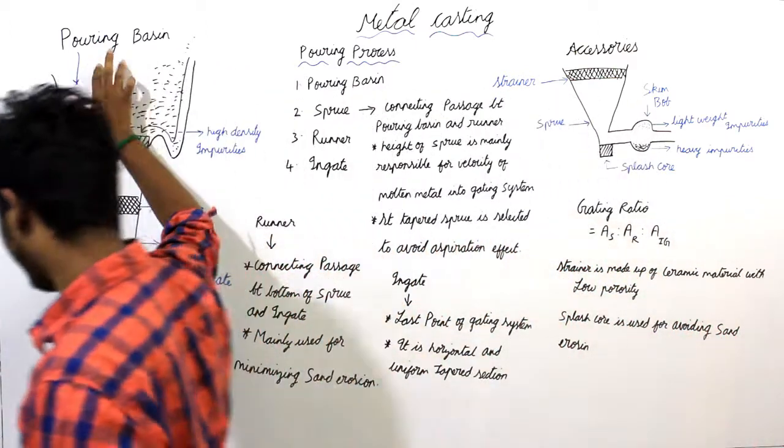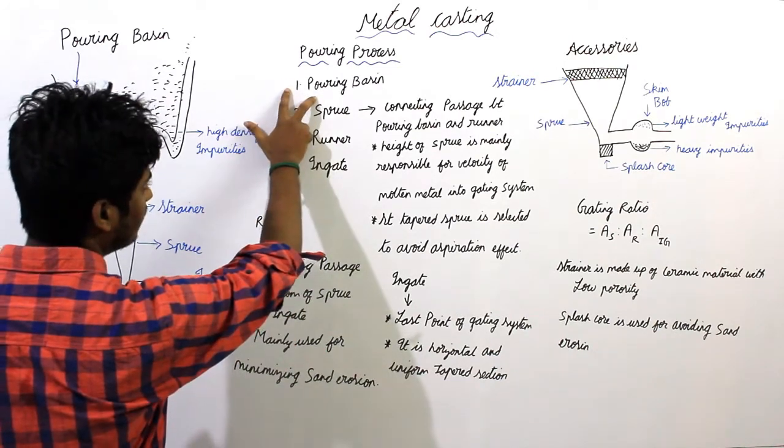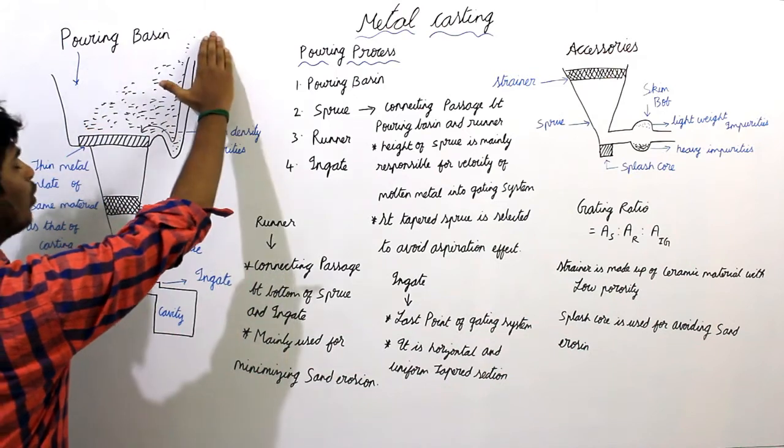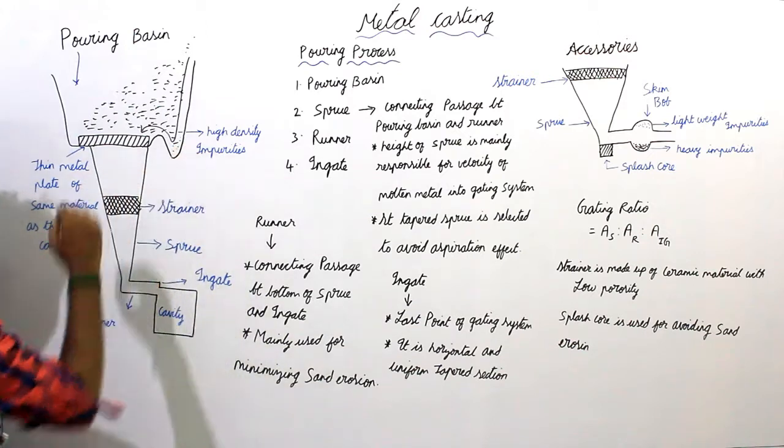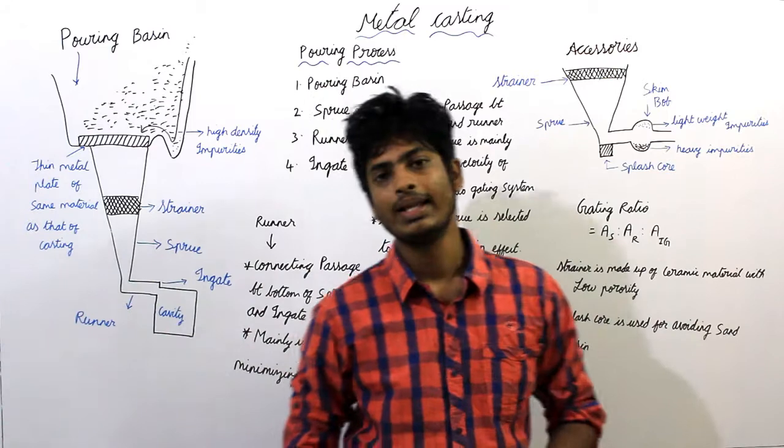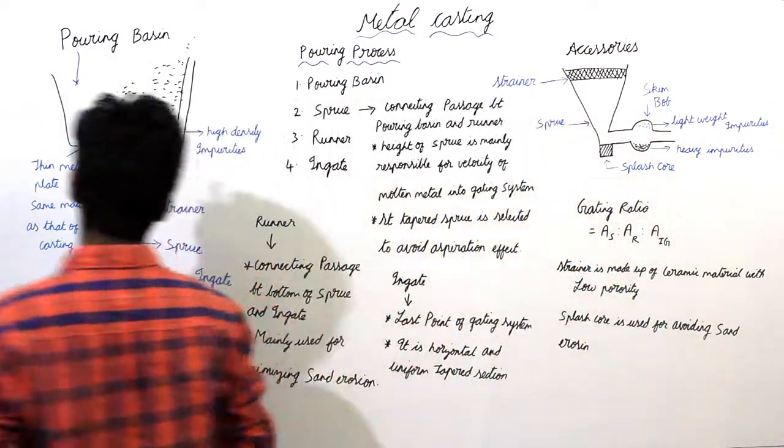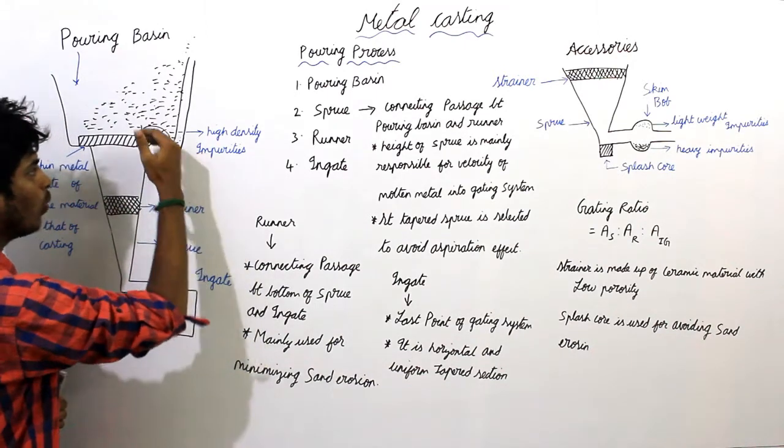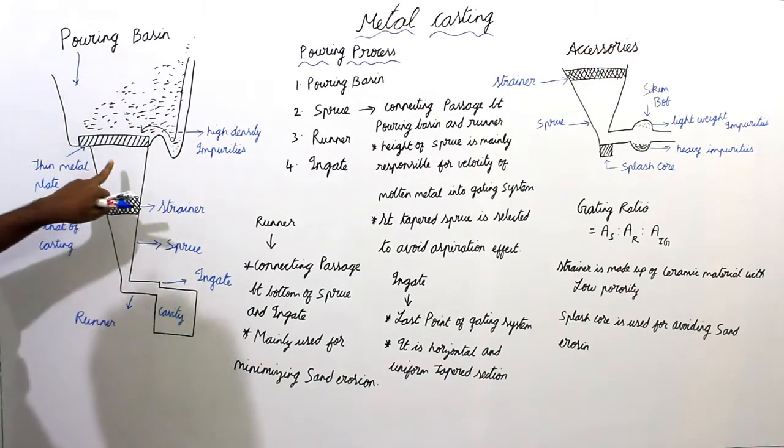First we have pouring basin. Pouring basin is the first element of this gating system. In the pouring basin, the molten metal is always poured in this small cavity. This small cavity acts as the first stage of separating the impurities from the molten metal. Here very high density impurities settle down and only the pure molten metal comes into contact with this thin plate.